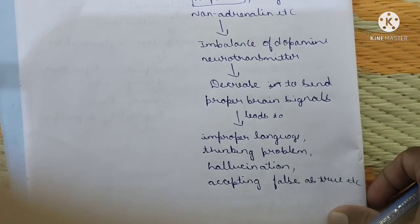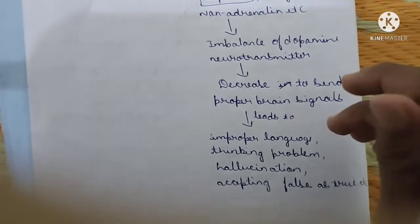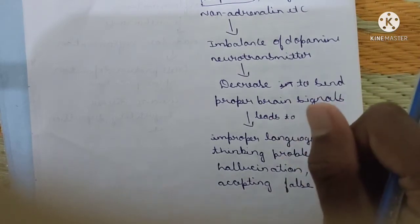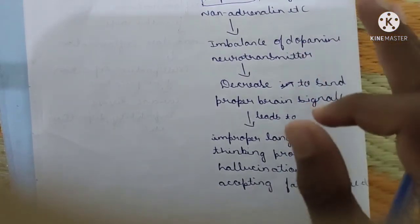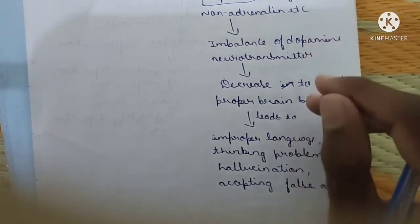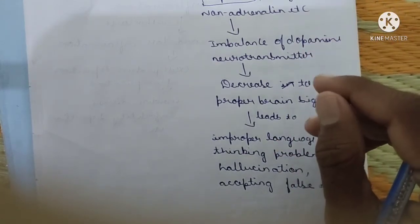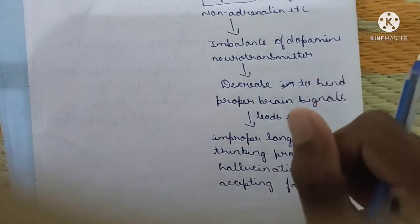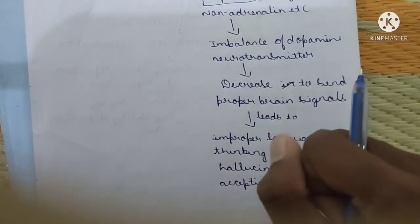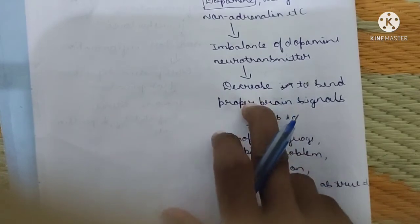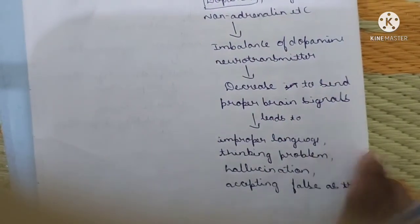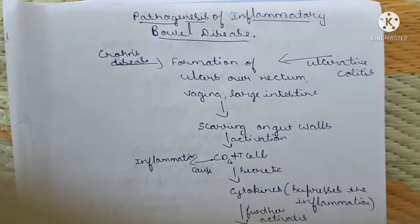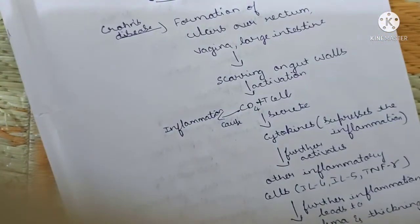The decrease in proper brain signals leads to improper language, thinking problems, hallucinations, and accepting false things as true. The patient may also use rough language, and blood pressure rises for two to three seconds due to excitation of brain cells caused by dopamine neurotransmitter imbalance.